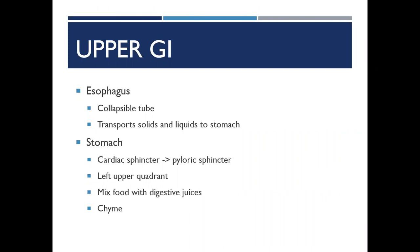Your upper GI tract starts in the mouth, where your mouth begins by breaking that food down. Then that passes from your mouth into your pharynx and down into your esophagus. Your esophagus connects your pharynx to your stomach. The esophagus passes through the mediastinum and diaphragm, meeting the stomach at the lower esophageal sphincter. The primary function of the esophagus is to transport solids and liquids from the mouth to your stomach.